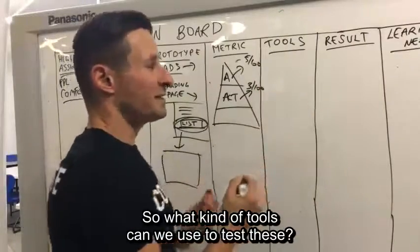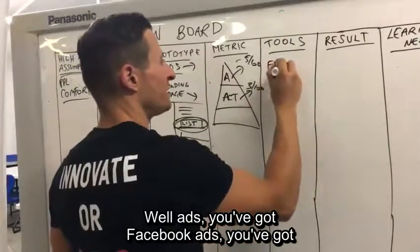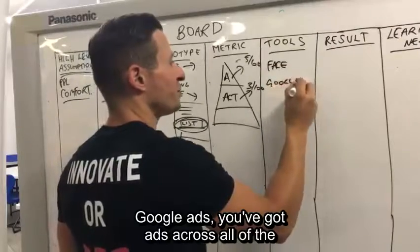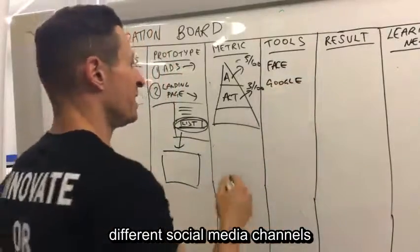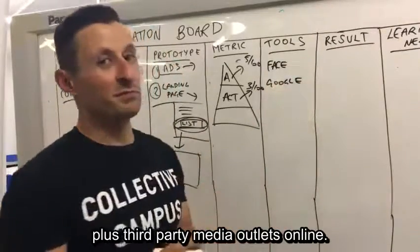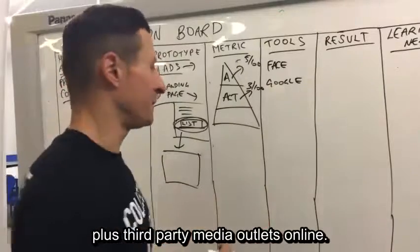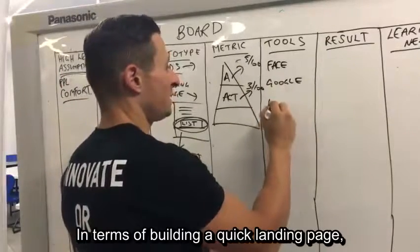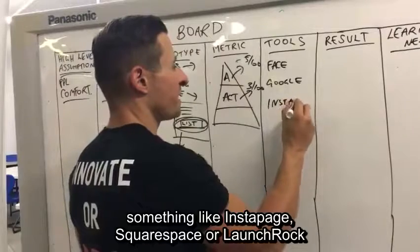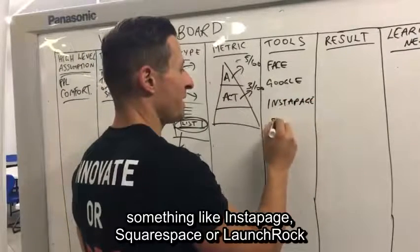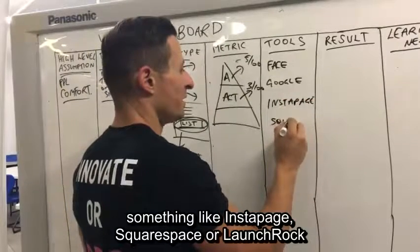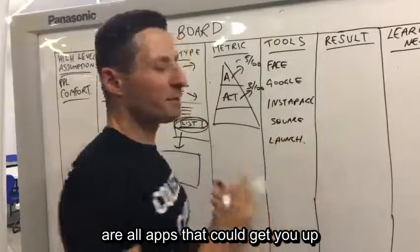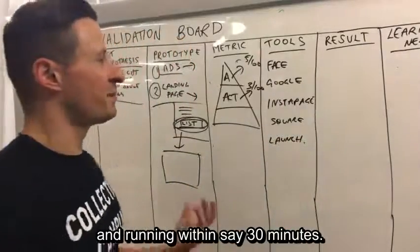So what kind of tools can you use to test these? For ads, you've got Facebook ads, you've got Google ads, and ads across all the different social media channels, plus third-party media outlets online. In terms of building a quick landing page, something like Instapage, Squarespace, or LaunchRock are all apps that can get you up and running within 30 minutes.